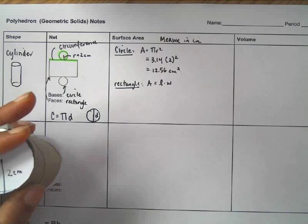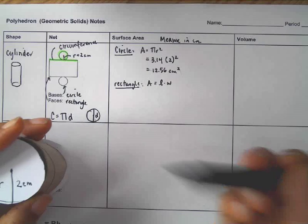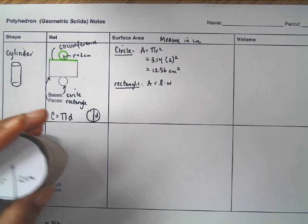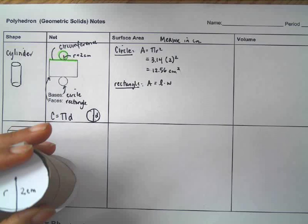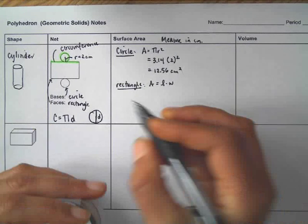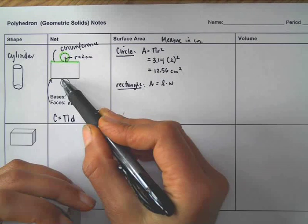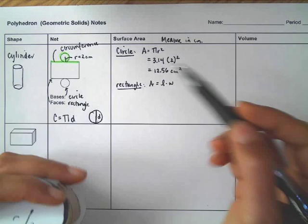So once again, I have a couple of choices here. Since you actually have a physical object, one possibility is you could take a measuring tape and go around and measure it. But I'm going to just show you how to do the calculation.